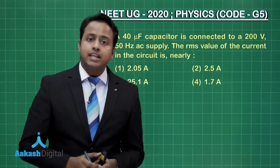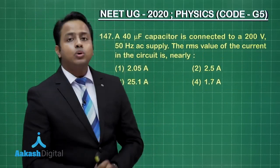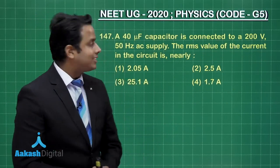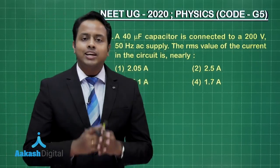So, in this question number 147, a 40 microfarad capacitor is connected to a 200 volt 50 hertz AC supply. The RMS value of the current in the circuit is nearly.